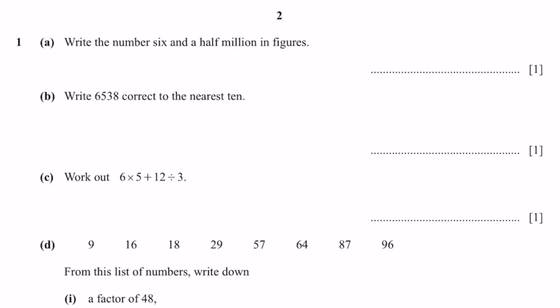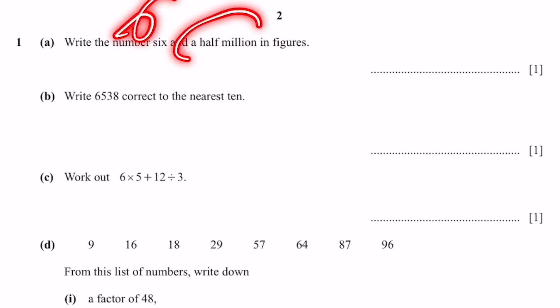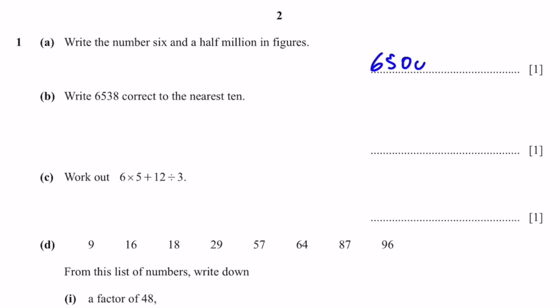Question 1, part A: Write the number 6.5 million in figures. So 6.5 million means 6 million plus half a million. That can be written as 6,500,000. That's the answer.